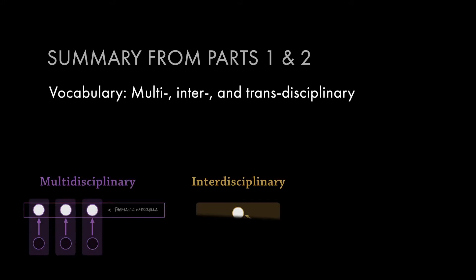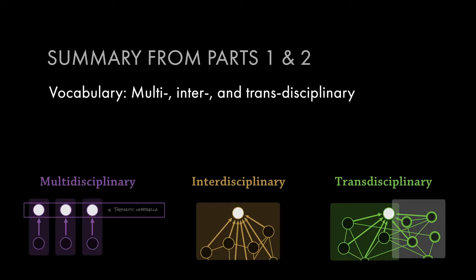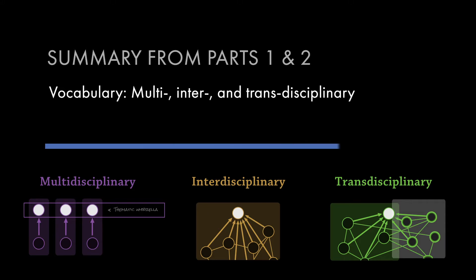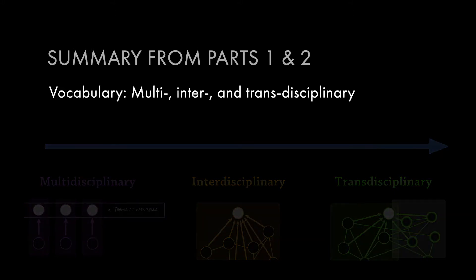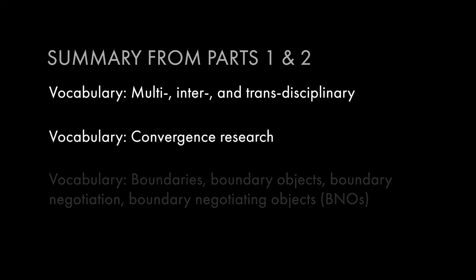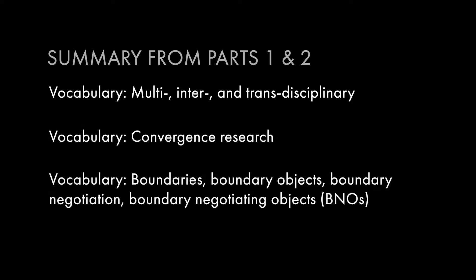Then in the second part, we talked about vocabulary. We made some distinctions between multi-, inter-, and transdisciplinary research. We talked about the fact that as you move from multi- towards transdisciplinary, you hopefully develop more and more integrated linkages across the disciplines. And we tried to do some definitions on this new notion of convergent research. I also introduced this language about boundaries — that's going to be important again today. We talked about boundaries around disciplines that we draw, and how the disciplines create themselves through time.